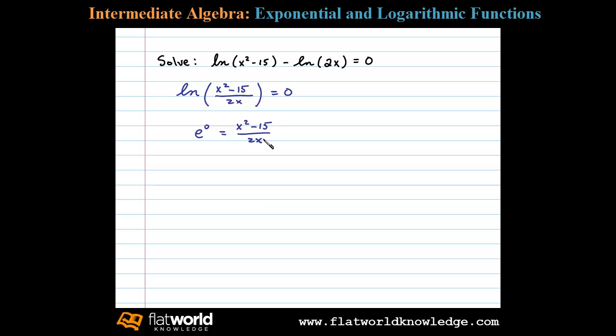over 2x. Now at this point we know e to the zero is 1, so we can write 1 equals x squared minus 15 over 2x. Before we cross multiply here, let's make a note that x cannot equal 0, and then